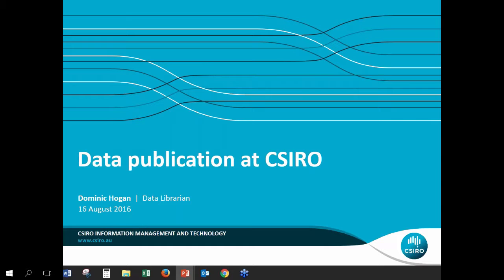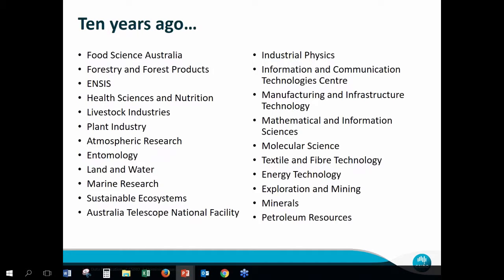Just to explain the broader context of data in CSIRO, I have this slide from what things looked like about ten years ago. We had a number of different divisions at the time, and each of these pretty much ran their own show. They got their portion of CSIRO's funding and had their own departments and libraries. There was collaboration between divisions and a CSIRO library network, but all in all, there were varying standards of information management throughout the organisation, just due to the nature that they were run separately.